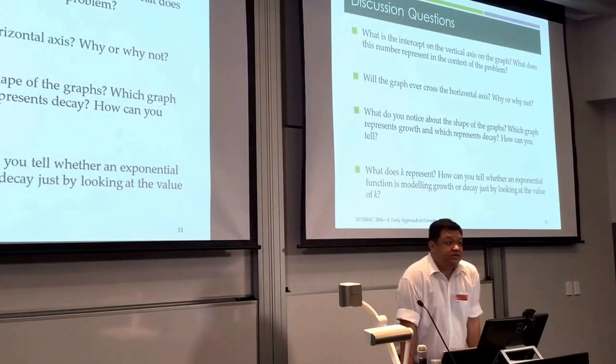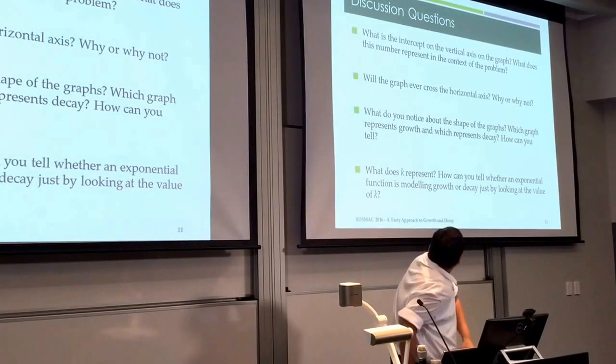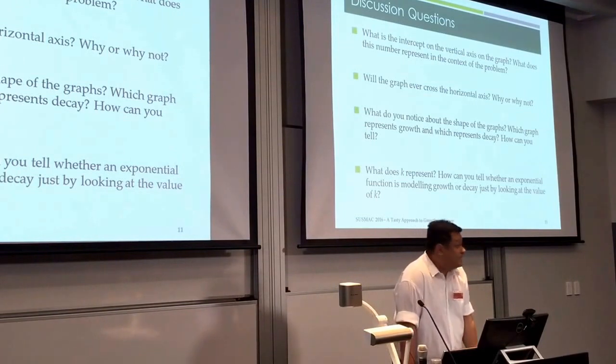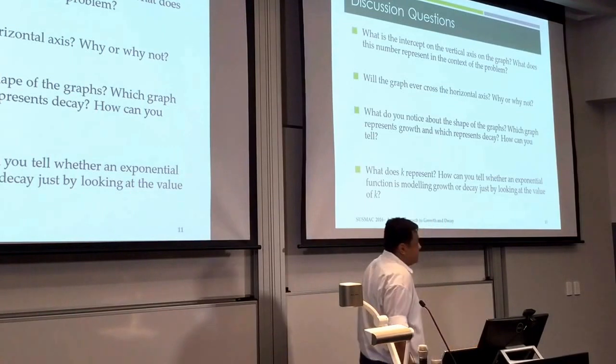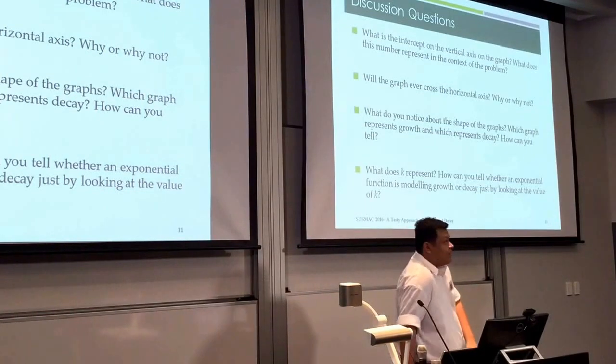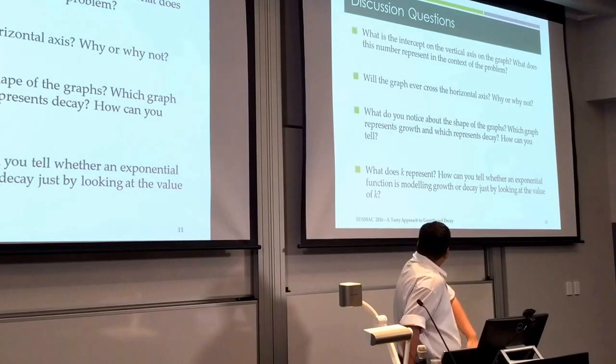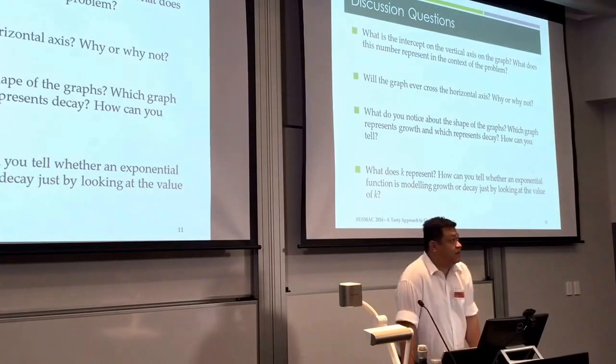The worksheet does guide your students through some discussion questions looking at, well, what are the intercepts representing? Does the graph actually cross the horizontal axis? Why not? What do you notice about the shapes? What is the value of K and how do you tell whether it's growth or decay just by looking at it?